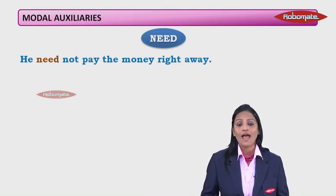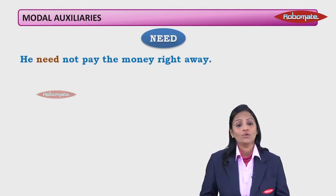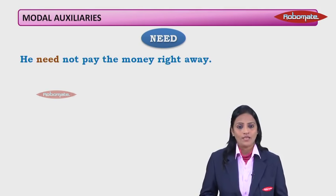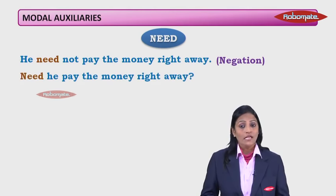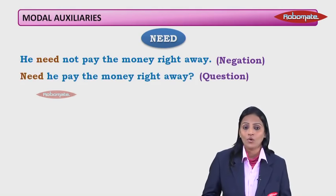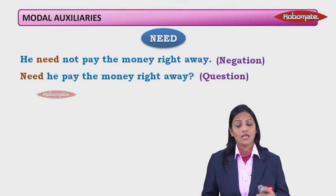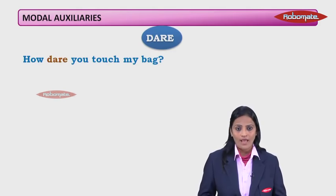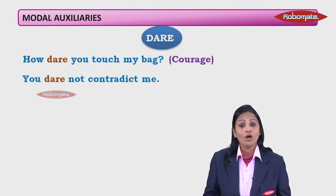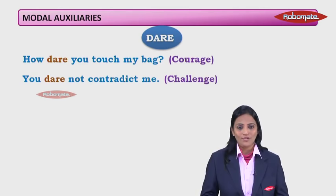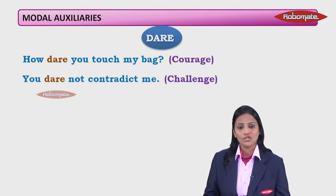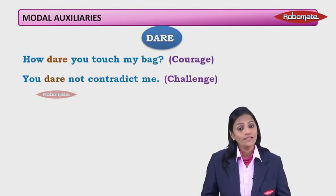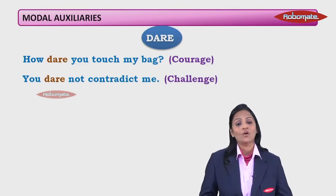'Need' shows necessity or absence of necessity, but it is only used as a modal auxiliary in negative or interrogative forms. 'He need not pay the money right away' — absence of necessity. 'Need he pay the money right away?' — interrogation. 'Dare' means challenge or courage. 'How dare you touch my bag?' — questioning courage. 'You dare not contradict me' — a challenge. Similarly, 'dare' is only used as a modal auxiliary in interrogative or negative sentences.